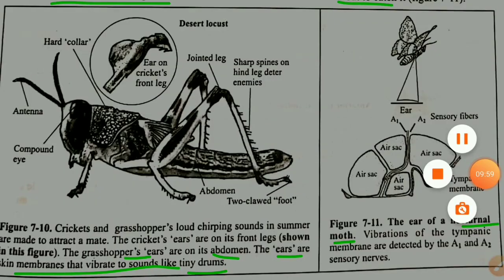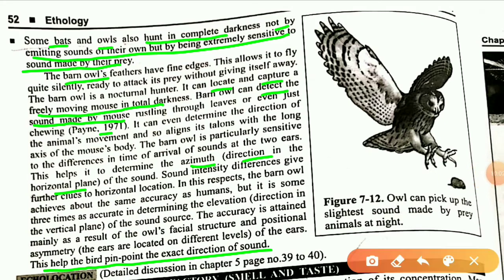Bats and owls can hunt in complete darkness by emitting sounds. Barn owls have feathers with fine edges that allow them to fly quite silently. They can locate their prey — even a freely moving mouse in total darkness — by detecting rustling sounds. This was demonstrated in 1971.